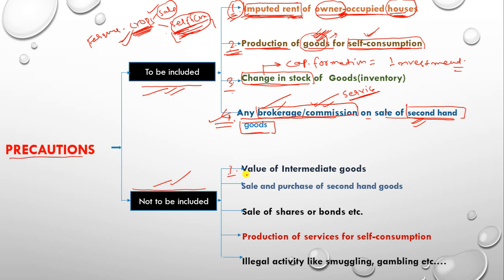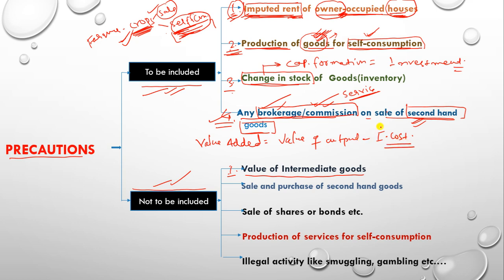Now let's look at items that are NOT to be added. The first is the value of intermediate goods. In the Value Added Method formula, we have: Value Added = Value of Output minus Intermediate Cost. Intermediate cost is deducted — it is not added. If intermediate goods were included, they would be counted twice in the value of output, creating the problem of double counting. To avoid double counting, intermediate goods' value is not added.